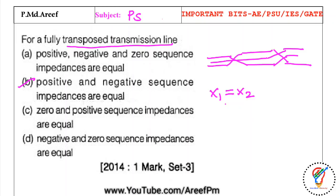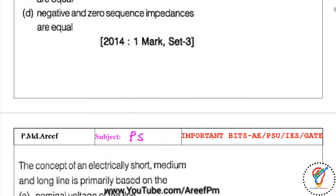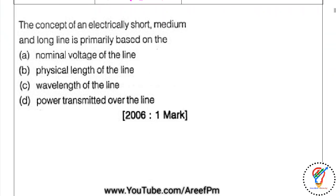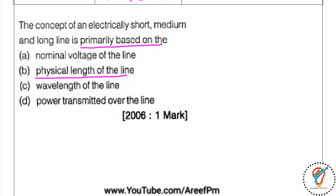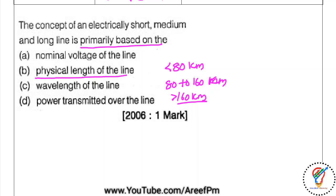The concept of electrically short, medium, and long lines is primarily based on the physical length of the line. Less than 80 kilometers is a short transmission line, between 80 to 160 kilometers is a medium transmission line, and greater than 160 kilometers is a long transmission line. So option B is the right answer here.